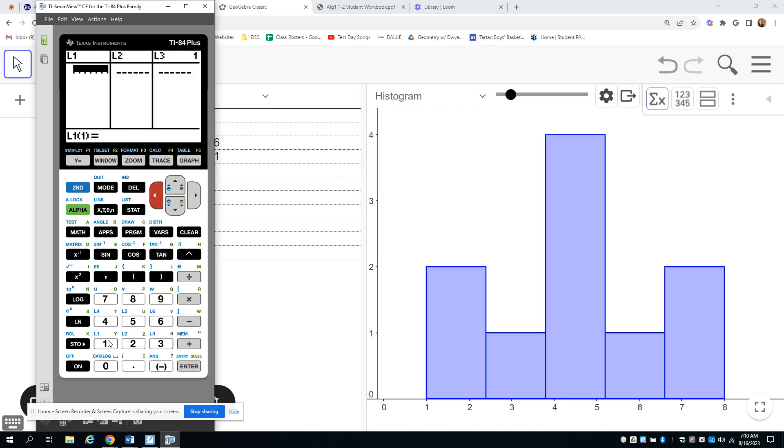So then we're going to type in our data again. So 1, 2, 3, 4, 4, 5, 5, 6, 7, and 8. It looks like I have an extra entry. No, I don't. Okay, so that's 10 entries. So if you look here, it tells you how many entries are in your list. So I have 10 entries.